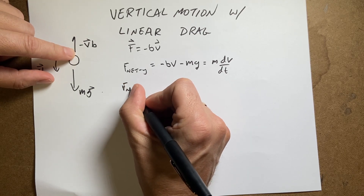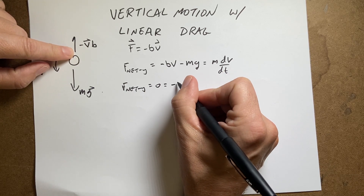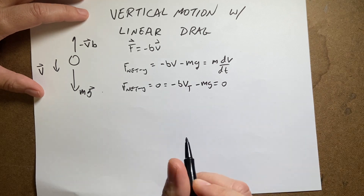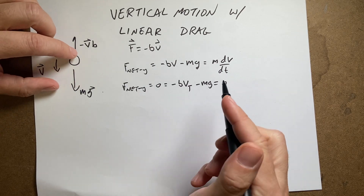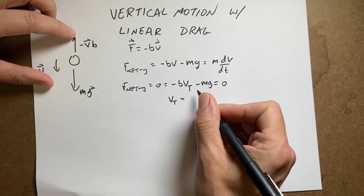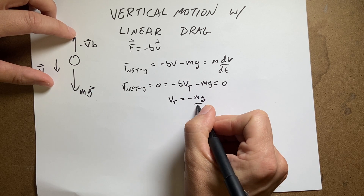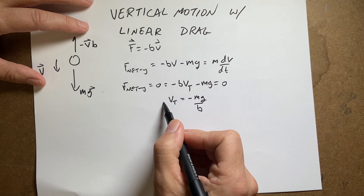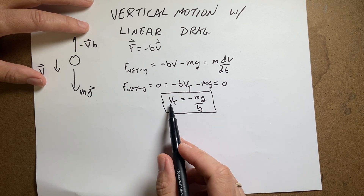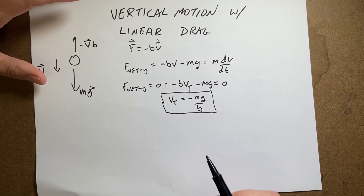At terminal velocity, the net force in the Y direction is equal to zero. So I write: negative B·VT minus MG equals zero, because at constant speed the derivative of velocity is zero. Solving this for VT, I get VT equals negative mg over B. That's the terminal velocity — it has to be negative because the velocity is going downward. The magnitude is just mg over B.